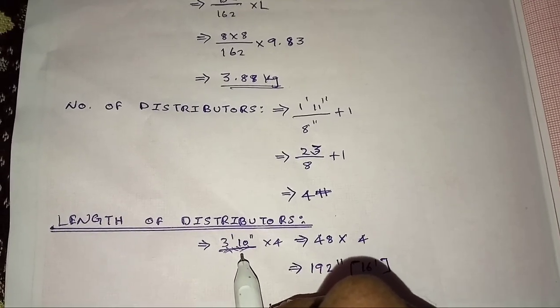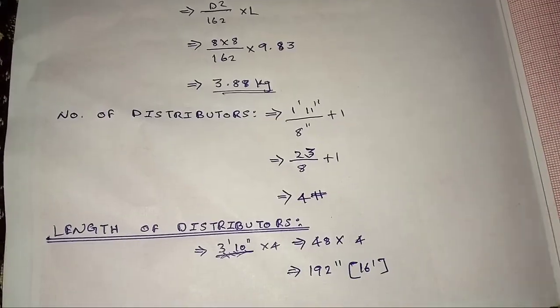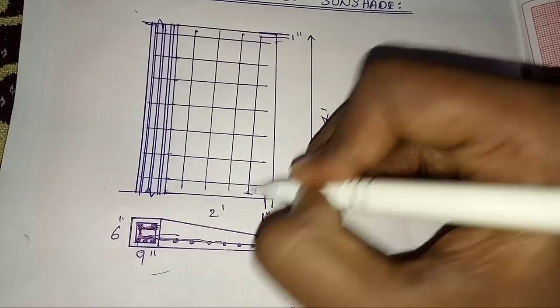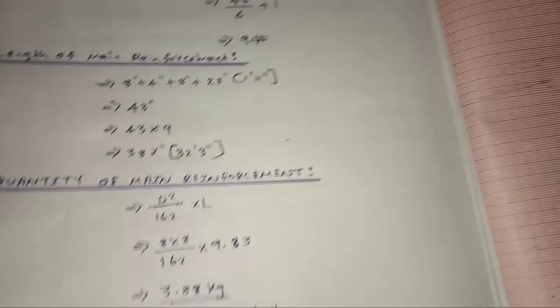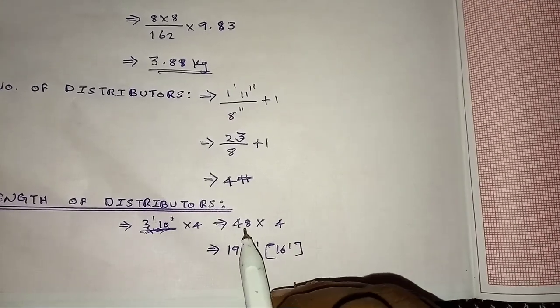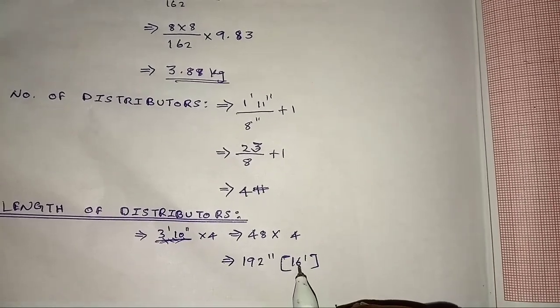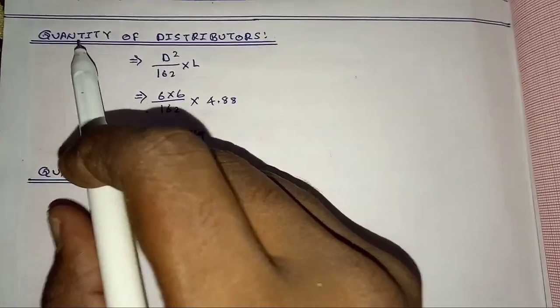Now already 11 inch. Full inch 23 inch divided by 8 inch plus 1. Distributors numbers 4 numbers. Length of distributors 3, 15 inch, 2, 4, 23 inch. 3, 15, this reinforcement. Full 4 here, 1 inch top 1 inch, here 3, 15 inch, next 45 inch, in last 1. Weight numbers 16, 16 feet.